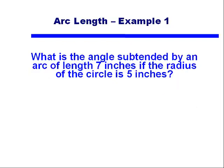Let's look at some examples. If I ask for the angle subtended by an arc length of 7 inches, given that the radius of a circle is 5 inches, how would we go about solving this? Well, we'd remember our formula, theta is equal to S over R.